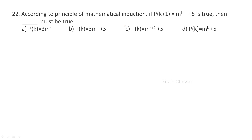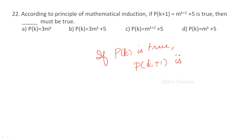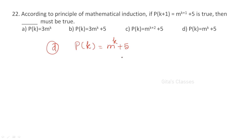According to the principle of mathematical induction, if P(k+1) equals m^(k+1) + 5 is true, then what must be true? If P(k) is true then P(k+1) is true. Here, they give P(k+1), so the previous value P(k) must be true. For P(k+1), k+1 should be replaced by k.